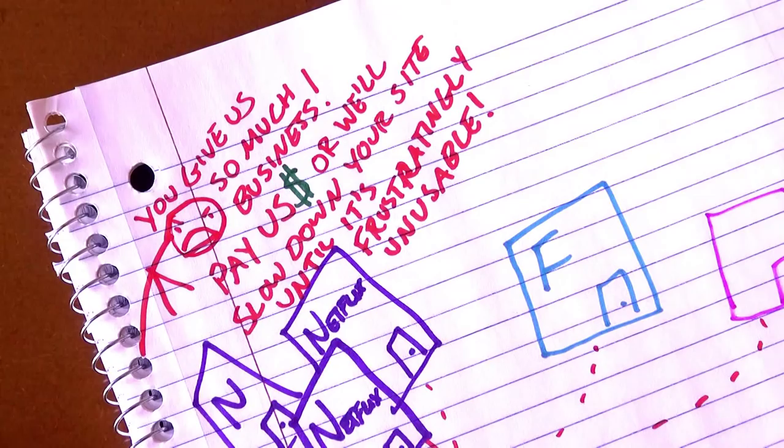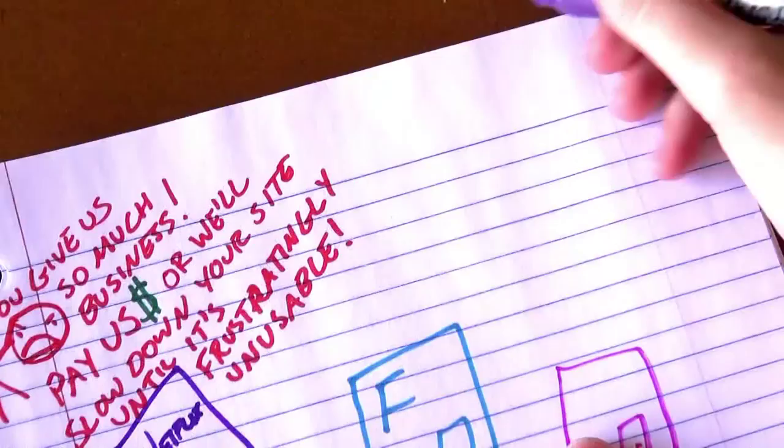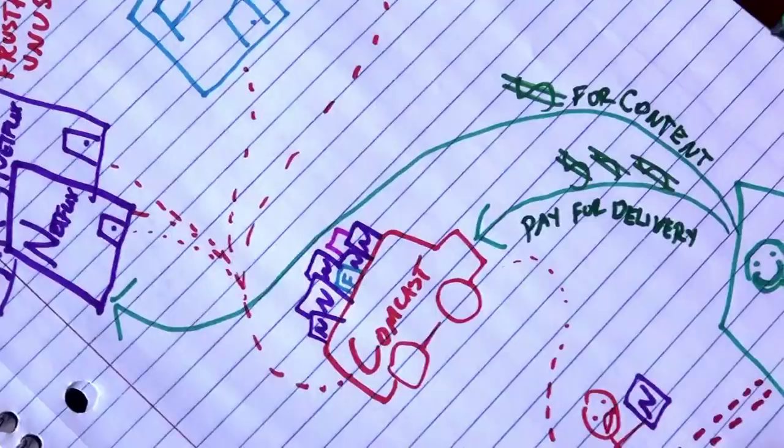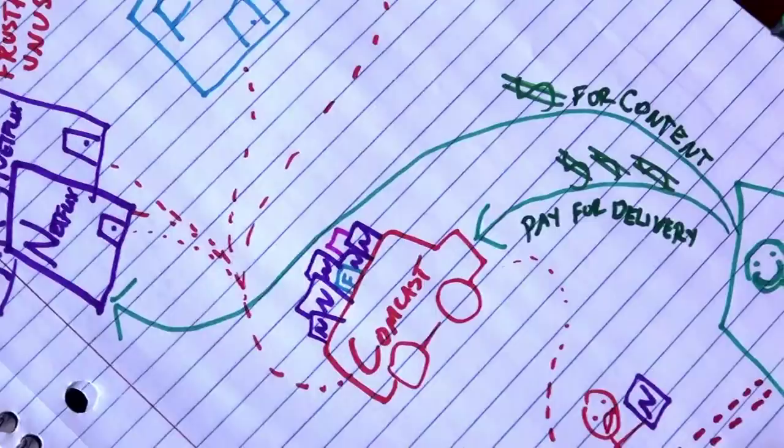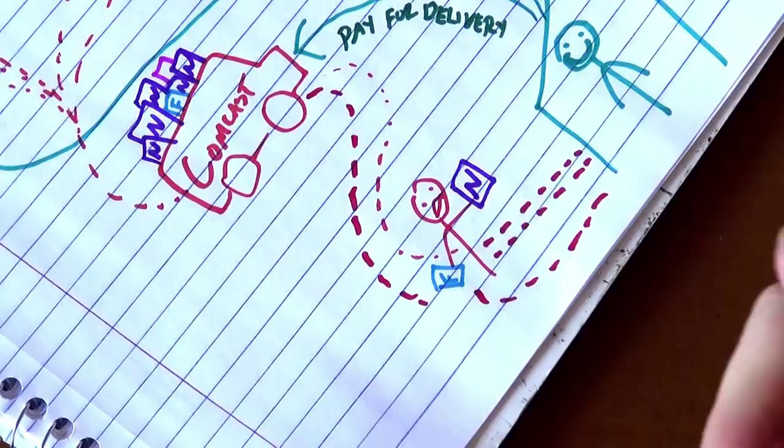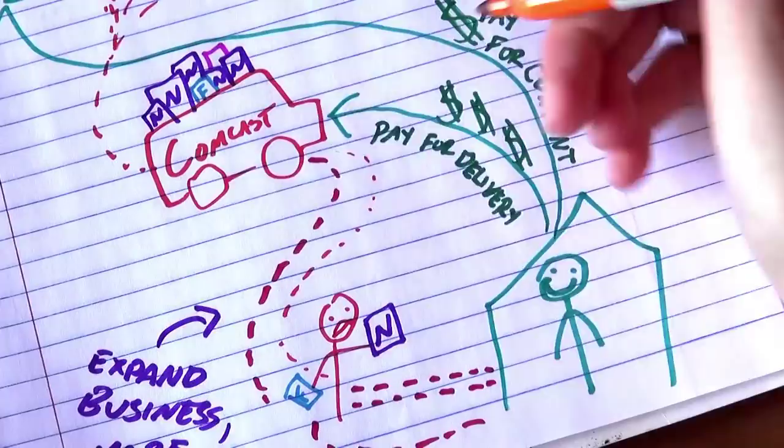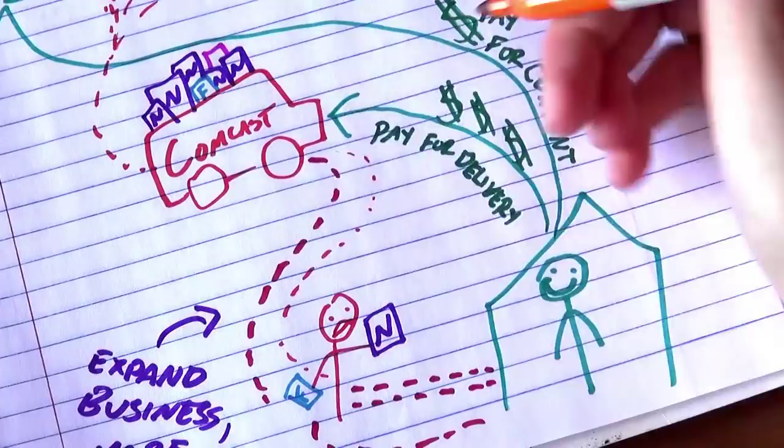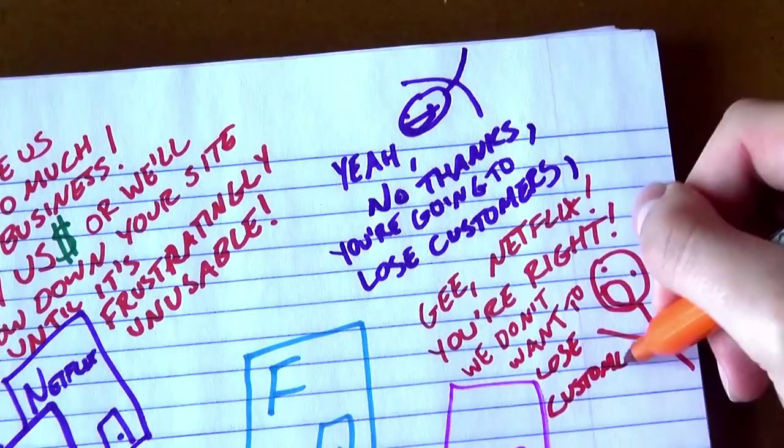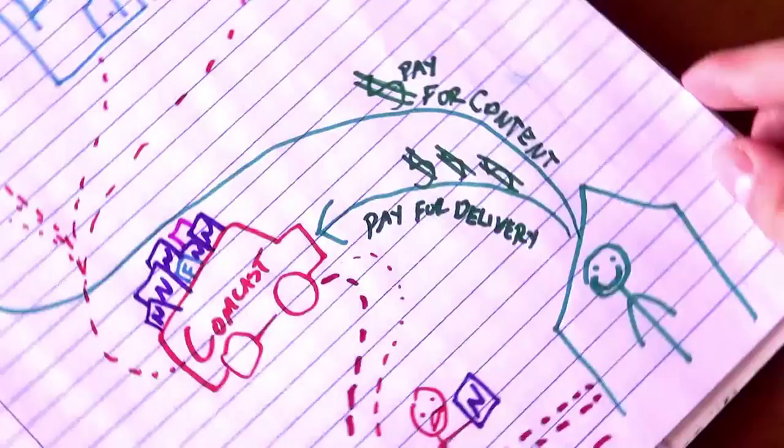Netflix should be able to say, yeah, no thanks. First of all, you're going to lose your customers if you don't give them the service they're paying for. And second, why wouldn't you want to lay down more cable and expand your business? Wouldn't that make you more money? It would make so much sense if Comcast's reply was, gee Netflix, you're right. We don't want to lose customers. We want to lay more bigger cable, expand our business, and make more money.